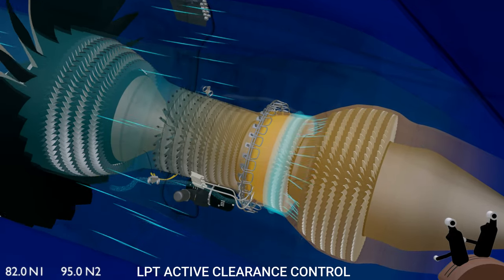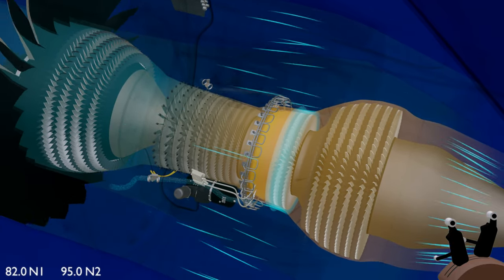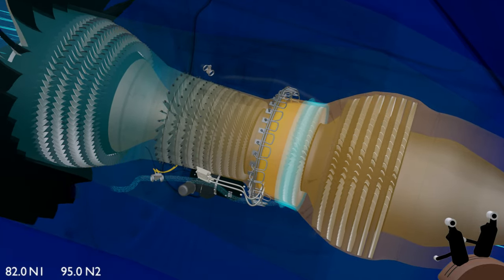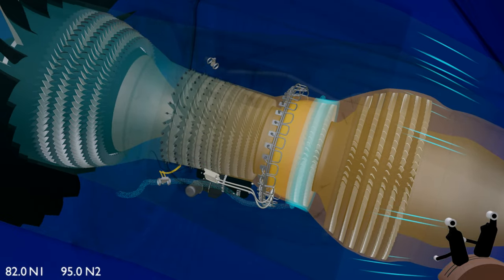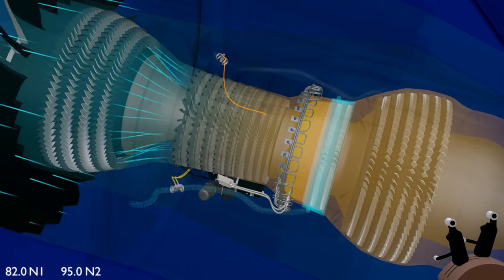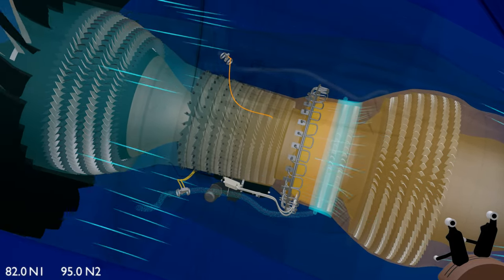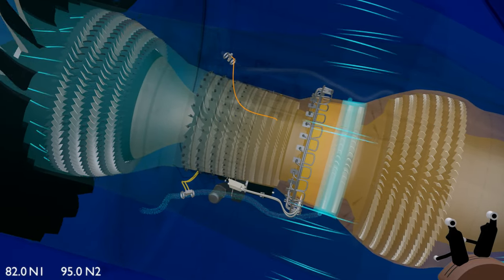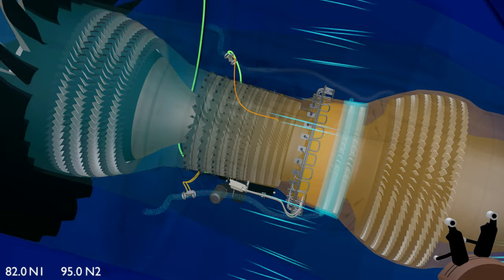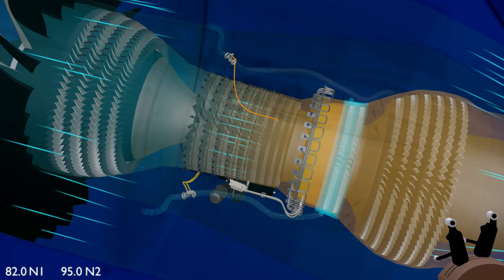Low pressure turbine active clearance control: The LPT ACC system uses a different actuation mechanism. Instead of the servo fuel pressure from the HMU, it takes a pneumatic line from the HPC stages. The electro pneumatic valve is directly controlled by the EEC. The valve opens to let the bypass air reach the manifold around the LPT turbine casing.